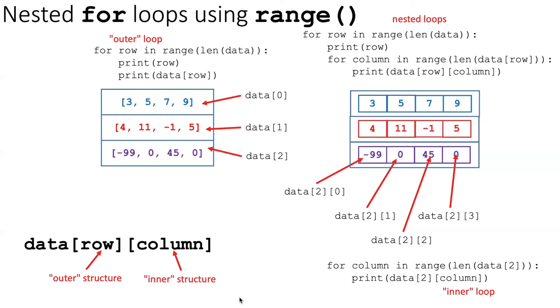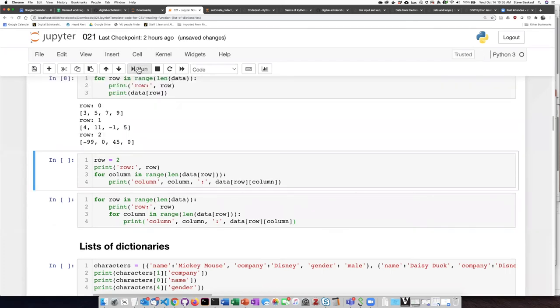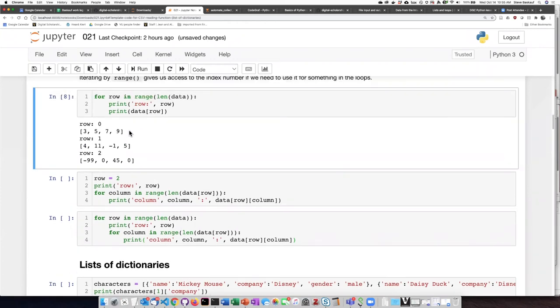Let's go ahead and try that code. First, let's step through the indices of the outer list. When I'm on row zero, I get the list that is included in the first item of the outer list. Then when I do row one, I get the second item and then the third item.